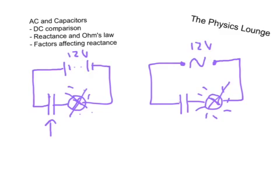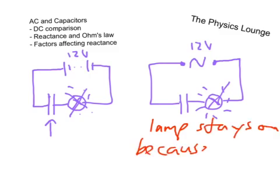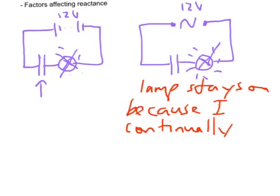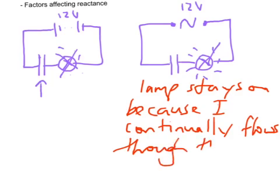Now it's really important to understand the reason why this stays on. The lamp stays on because current continually flows. In fact, if we're being really precise, we'll say current continually flows through the lamp.